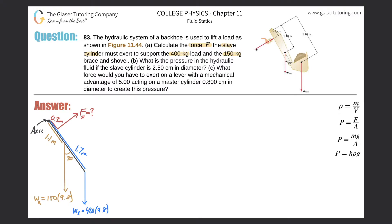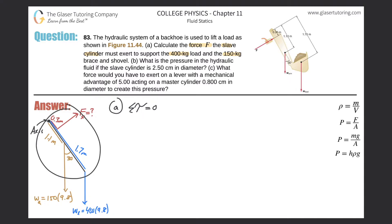The problem doesn't explicitly say the system is in static equilibrium, but we have to assume that's the case. If it had some angular acceleration we'd have no way to know, so we assume the simplest set of conditions — equilibrium — which means the sum of the torques must equal zero. We're dealing with torque because forces are acting at distances relative to an axis of rotation.